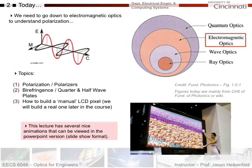Today, to understand polarization, we need to go down to electromagnetic optics — deeper than ray and wave optics. We're going to cover polarization and polarizers, birefringence, quarter and half wave plates, and we'll talk about how you build a manual LCD pixel. We'll build a real one later in the course, but we'll cover the basic components needed to make LCD TVs.